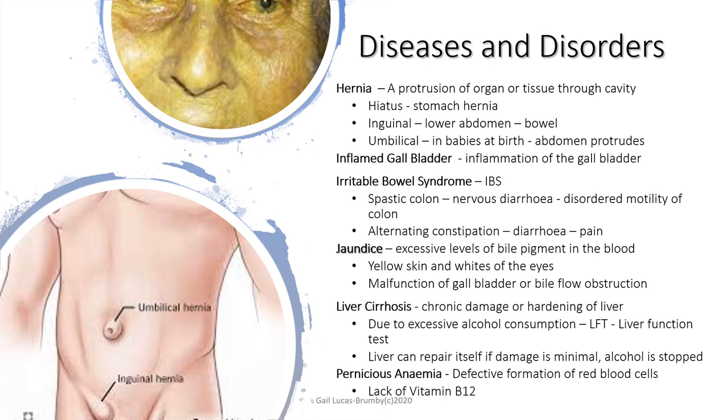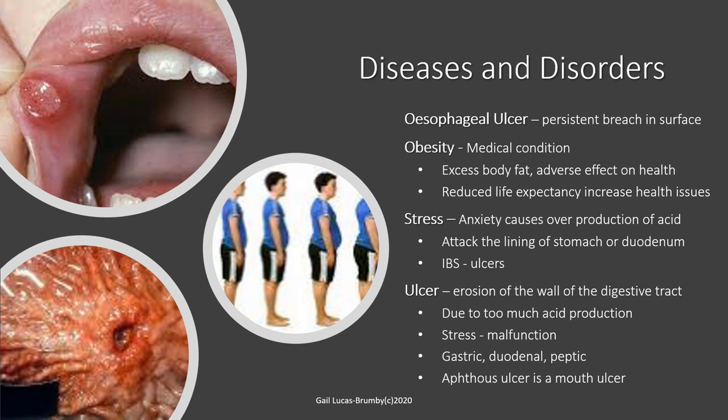Pernicious anaemia is a defective formation of red blood cells through lack of vitamin B12 — a serious condition where the blood cells' ability to carry oxygen is affected. An oesophageal ulcer is a painful erosion in the oesophagus. Obesity is a very common medical condition of excessive body weight that adversely affects health, reduces life expectancy and increases health problems. Stress causes anxiety and produces more gastric and digestive juices which attack the lining of the stomach, potentially leading to IBS or an ulcer.